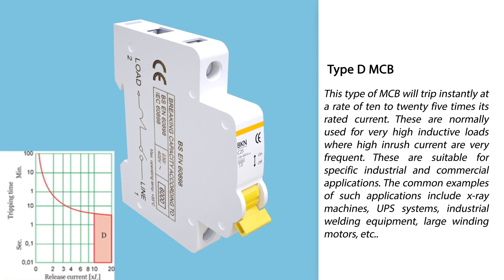Type D MCBs will trip instantly at ten to twenty-five times their rated current. These are used for very high inductive loads where high inrush currents are very frequent. They are suitable for specific industrial and commercial applications, with common examples including X-ray machines, UPS systems, industrial welding equipment, and large winding motors.